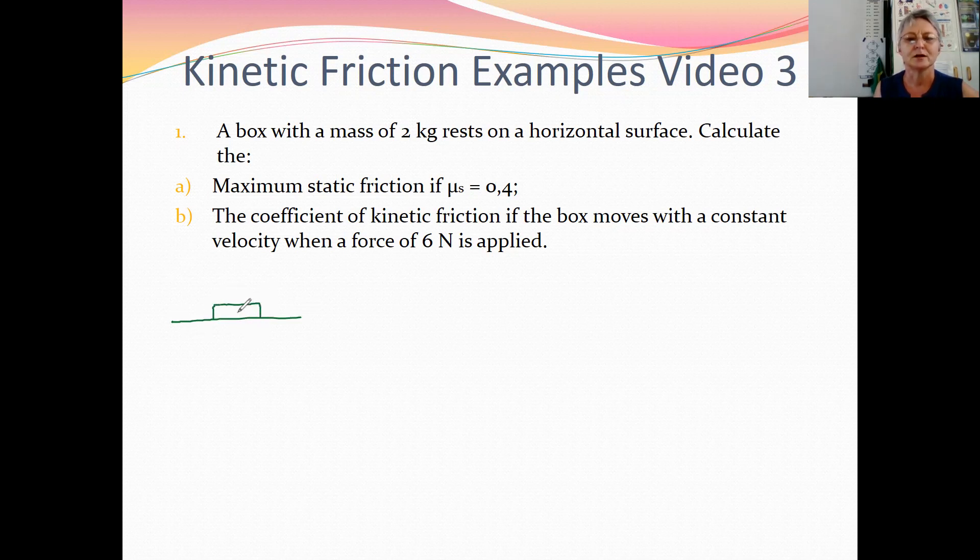So here we have a box that's got a weight, Fg, which can be calculated by multiplying mass by the gravitational acceleration. So it's two times 9.8 which gives us 19.6 newton.